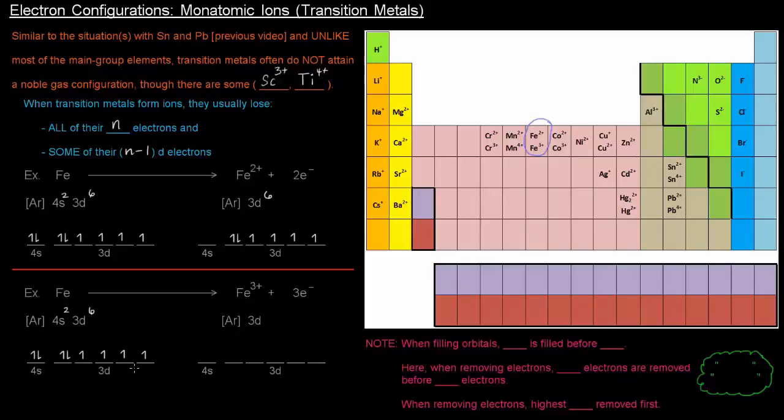Which ones are we going to lose? We're definitely going to lose those 4s electrons, both of those. But then we have, of these, which is going to leave, it's that one that's paired up, to leave it entirely half full. So, we're going to have this orbital diagram.